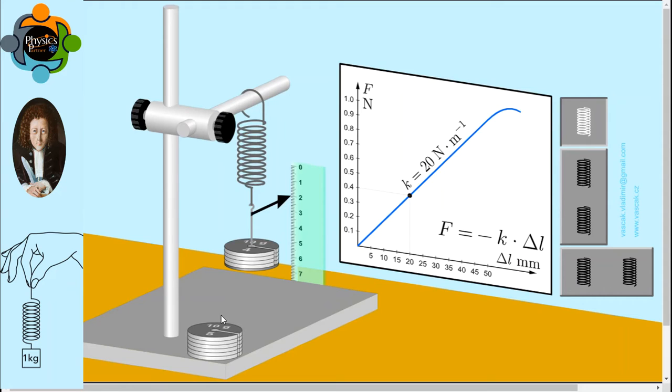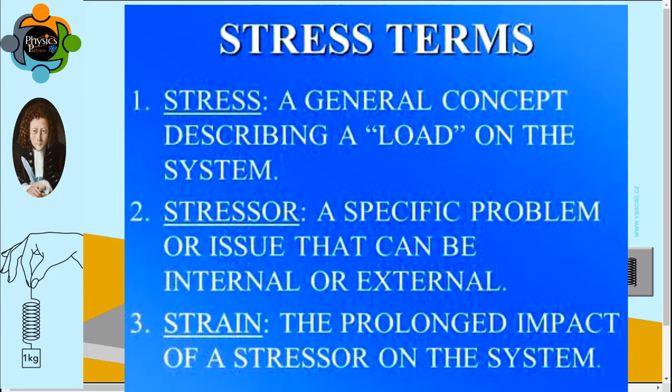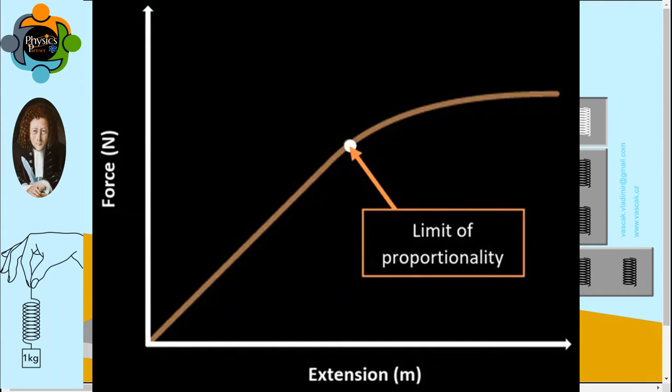Theoretically, according to Hooke's Law, the applied force and the extension is directly proportional. In other words, stress and strain are directly proportional. Stress means the applied force and strain means the change in length. If you look at the graph, it's a straight line, which shows it is a directly proportional graph. You can see the spring constant value k is 20 newton per meter.